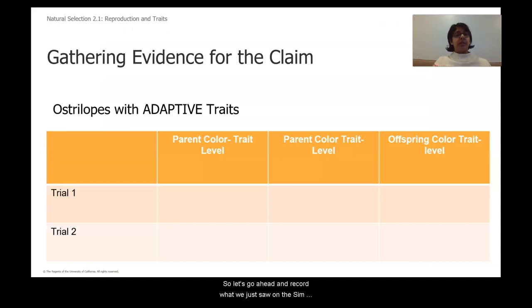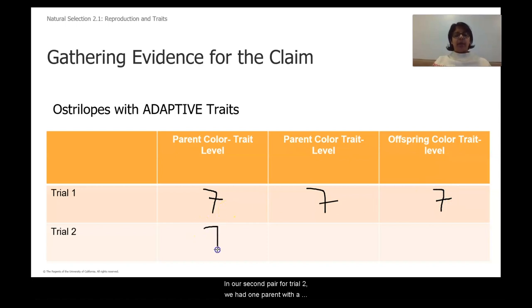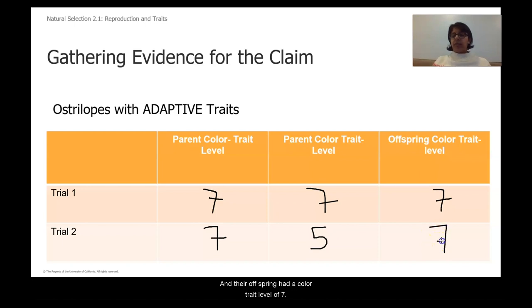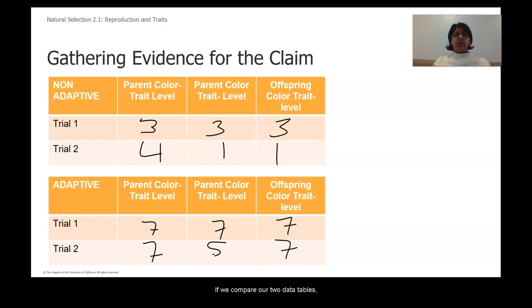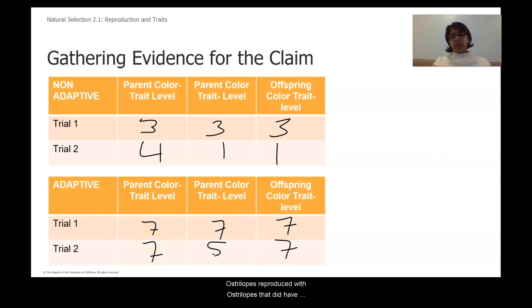Let's record what we saw in the simulation on our data table. Trial one: one parent with color trait level seven, other parent with level seven, offspring with level seven. Trial two: one parent with color trait level seven, one parent with level five, offspring with level seven. Comparing our two data tables — non-adaptive and adaptive — non-adaptive ostrilopes reproduced with ostrilopes that had non-adaptive traits, and adaptive ostrilopes reproduced with ostrilopes that had adaptive traits.